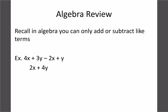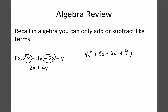Before we get to that, let's think back to some basic algebra. In algebra, we could only add or subtract like terms — terms with the same variable. So 4x minus 2x gives 2x, and 3y plus y gives 4y. The same applies with exponents: in 4x² + 3x − 2x² + 4x, we can only combine like terms — 4x² and 2x² combine to give 2x², and 3x plus 4x gives 7x. Like terms must have the same letter and the same exponent.